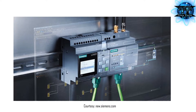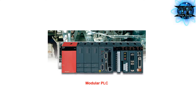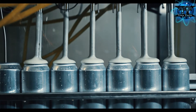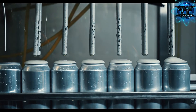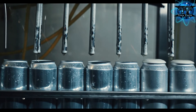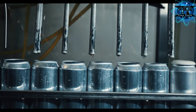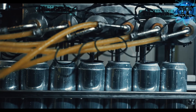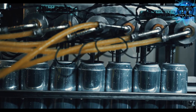Modular PLC is built with several components that are plugged into a common rack or bus. Modular PLCs can come in different sizes and allow for a much more customizable solution based on industry needs. An individual can program PLCs to perform specific tasks using a basic programming language called ladder logic.